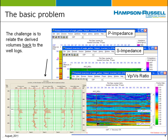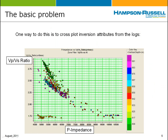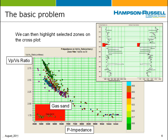The challenge now is to relate the derived volumes back to the well logs in a meaningful and mathematical sense — that's what litho-SI wants to do. One way we could approach this problem would be to create a cross-plot of the inversion attributes using the logs themselves. For example, if I did a pre-stack inversion and had two volumes — VP/VS ratio and P impedance — I could cross-plot the well logs of those properties. Then I could highlight particular zones, for example where I think there's a gas sand, and see it projected onto the well logs.